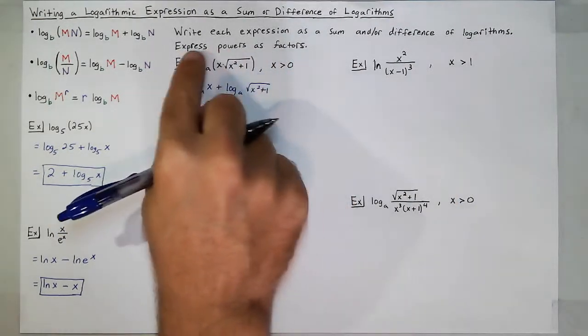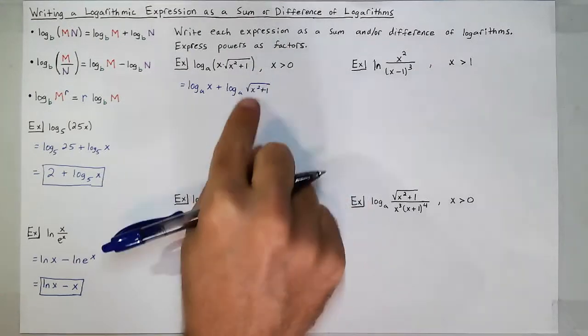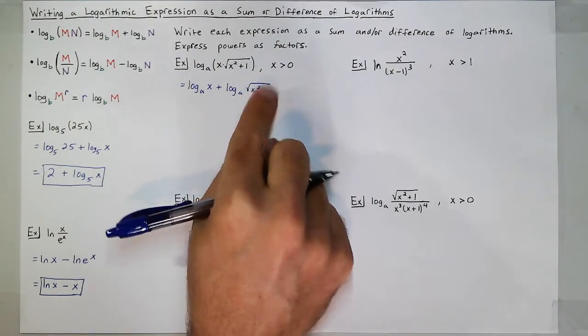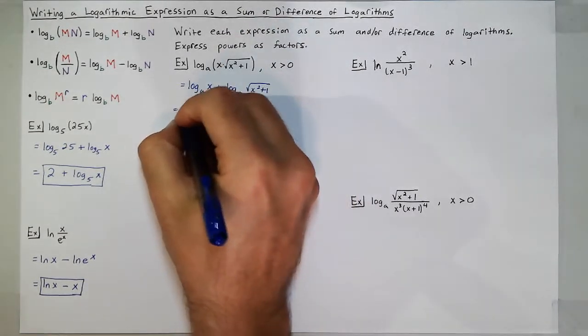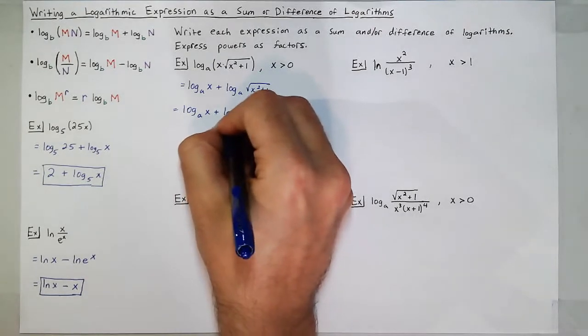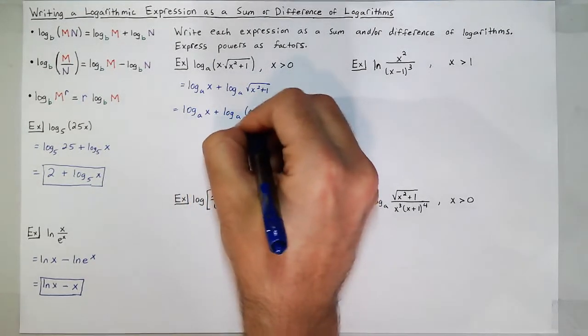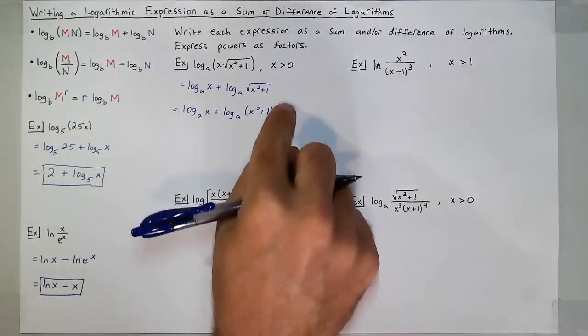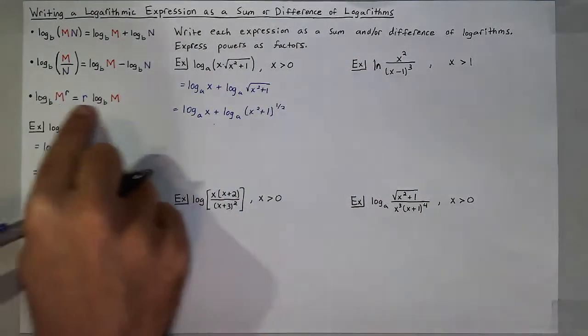Now, what does this mean by express powers as factors? Well, the square root of x can be rewritten as x squared plus 1 to the 1 half power. So if I have log base a of x plus log base a of x squared plus 1 to the 1 half, to make that power a factor, I move it to the front of the log using that bottom property.